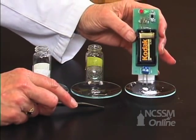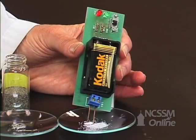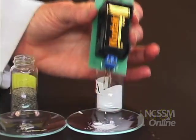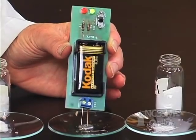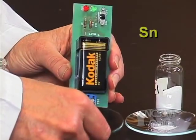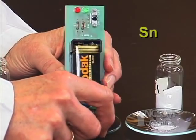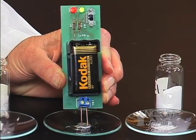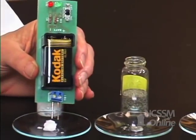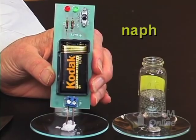So if we put our conductivity probe on this solid piece of sodium chloride, no lights come on. If we put them on this piece of tin, the lights come on. So tin is a conductor. This is naphthalene. We have a solid piece of naphthalene. It's not a conductor.